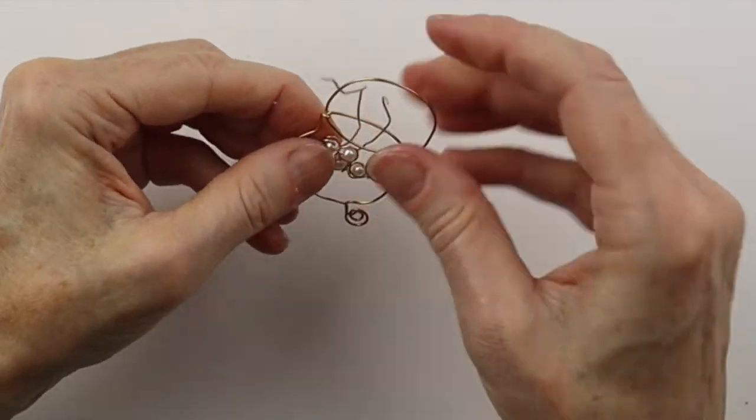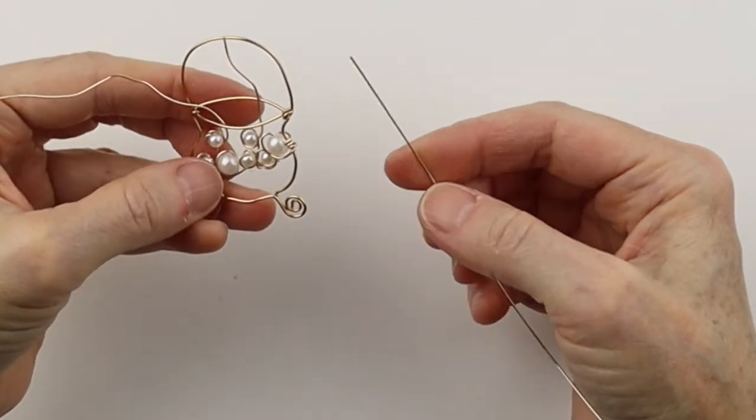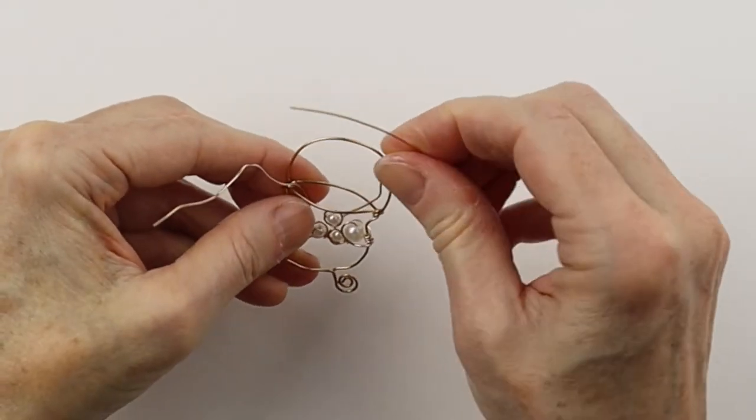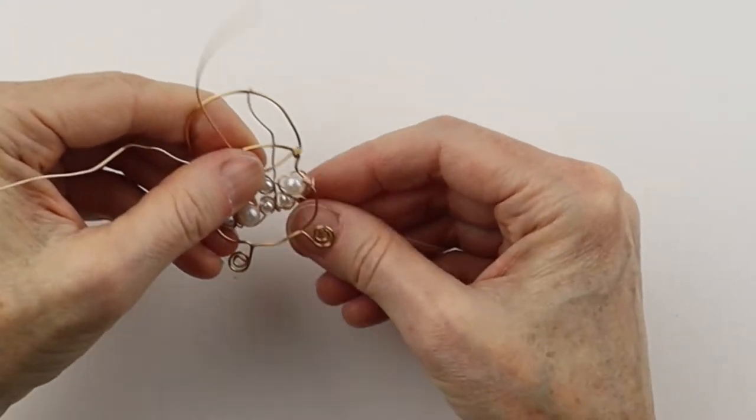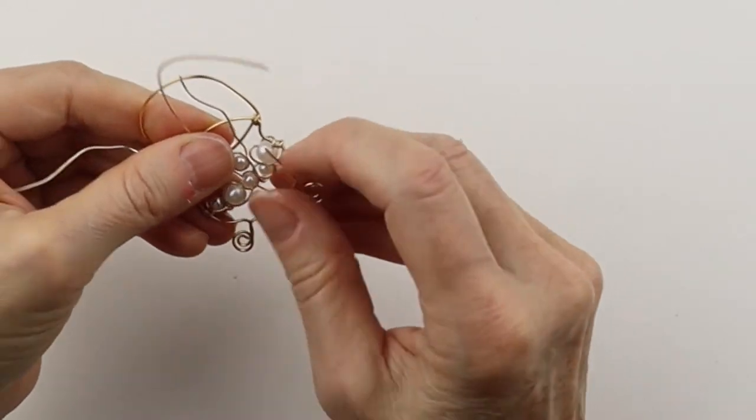Adjust the beads how you like. So we want one more steam. It's nice to have an odd number. So we're going to stick this one up through the top there, and then the other end is going to come down here.